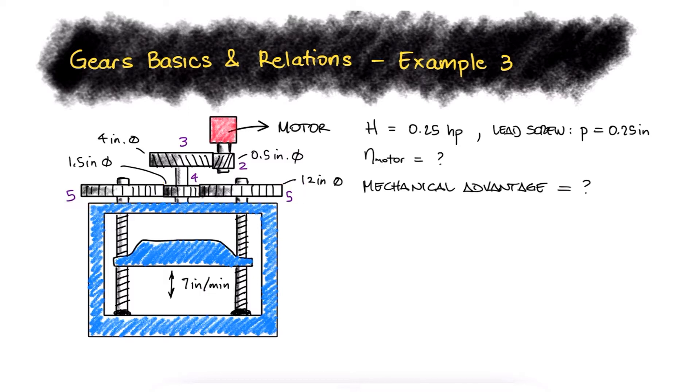The speed of the motor will share the speed with gear 2 since they are located on the same shaft. The speed ratios are inversely proportional to the diameter ratios and this is true for both sets of gears, gears 2 and 3 and gears 4 and 5.